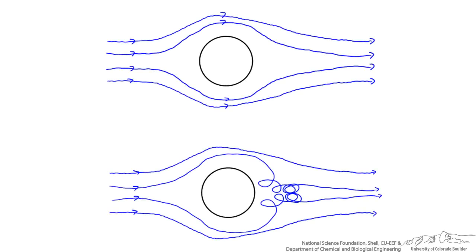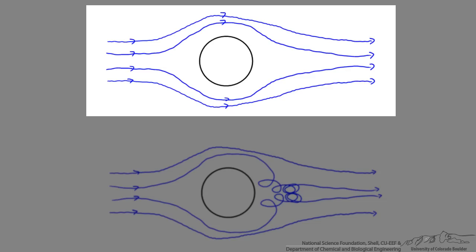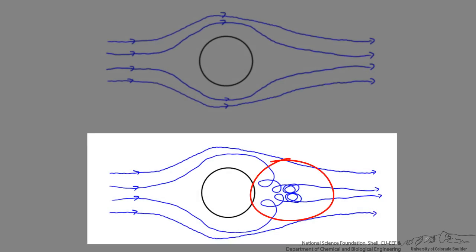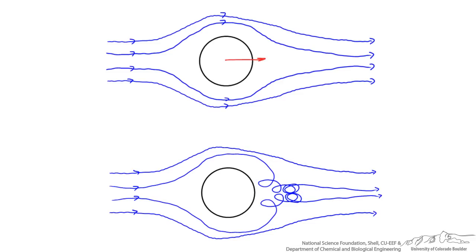Consider these two cases. There is fluid flowing over a sphere, and the fluid can either flow at a slow speed or at a fast speed. At slow speed there is a nice laminar flow profile, while at high speed there is a turbulent regime in the back. If you wanted to calculate the force of drag in both cases, there is no way to characterize the drag force for turbulent flow — no way to integrate the Navier-Stokes equations and calculate a drag force.